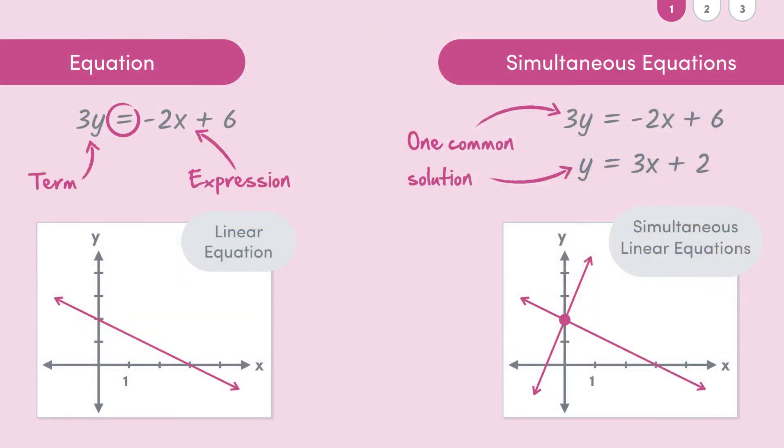Often the problem with simultaneous equations is that we don't know what the answer or common solution is, so we can't see that y equals coffee in either equation. In other words, we can't just look at the two equations we have and immediately know what the answer is. This means that we'll have to do a little bit of working out to figure out what the common solution is.